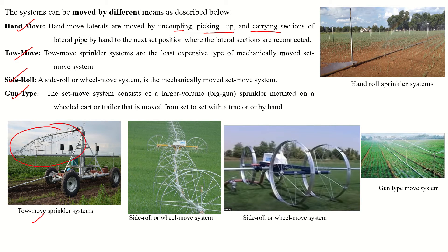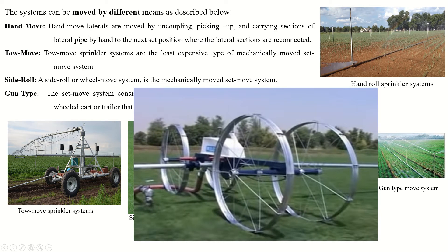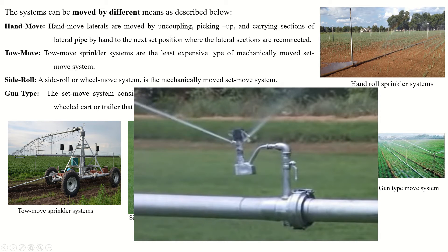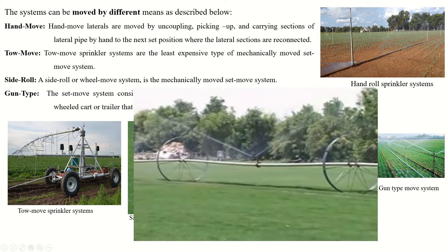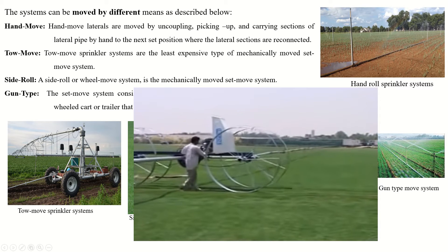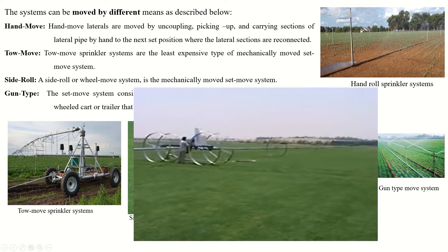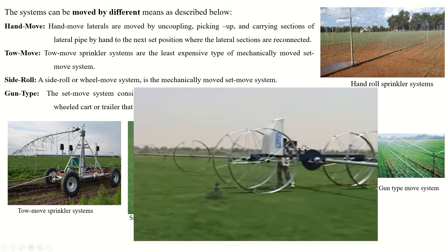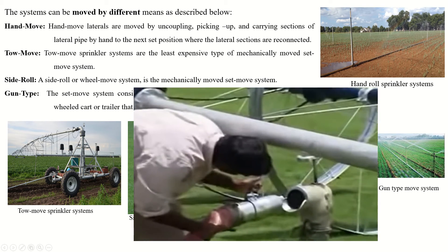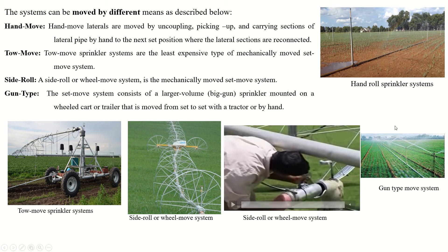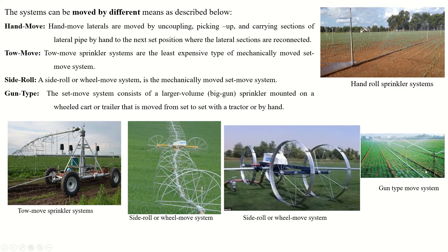In the toy move system, the complete system including the sub-main and sprinklers is connected to a machine that moves the system from one place to another after completion of each irrigation. In the side roll system, complete wheels are arranged and the entire sprinkler system moves continuously. After completing irrigation, the system is disconnected from the water source, moved a certain distance, reconnected, and water is applied to the field. Large sprinklers in the gun type system are arranged at equal intervals.